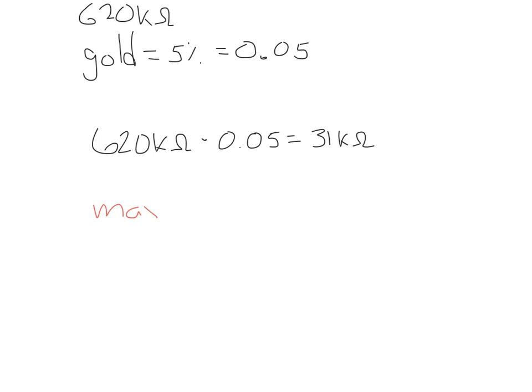Now, the resistor can have a maximum value. It can vary by being 31 kiloohms above the 620 kiloohms or it can be a minimum of 31 kiloohms below the 620. So basically, what this comes down to is that this 31 kiloohms has to either be above or below the 620, or in other words, adding and subtracting.